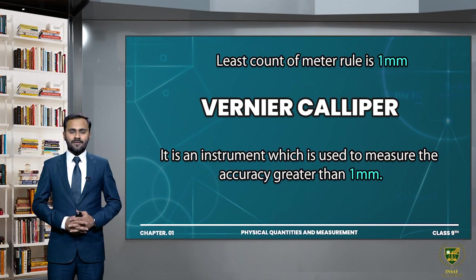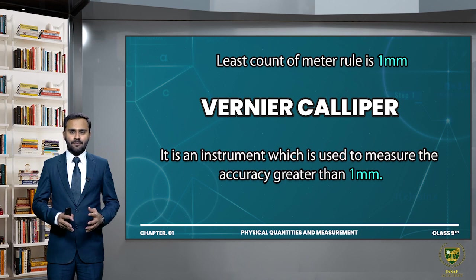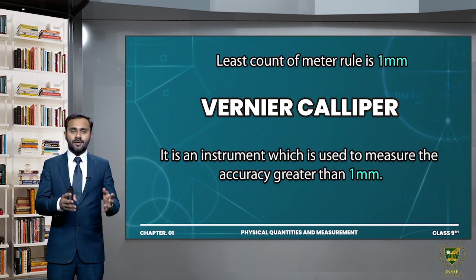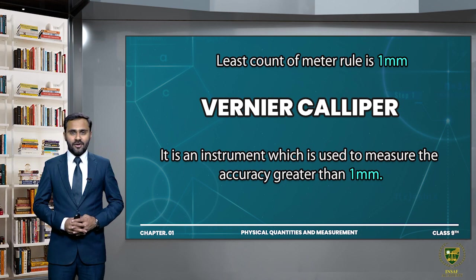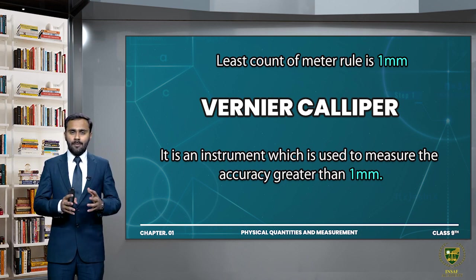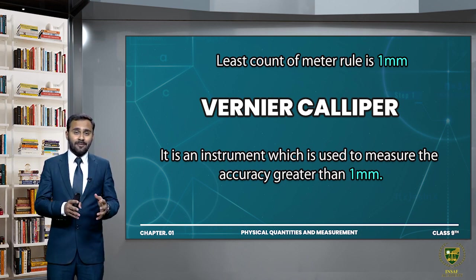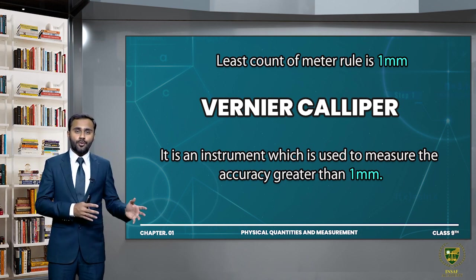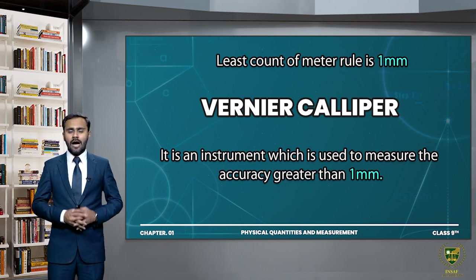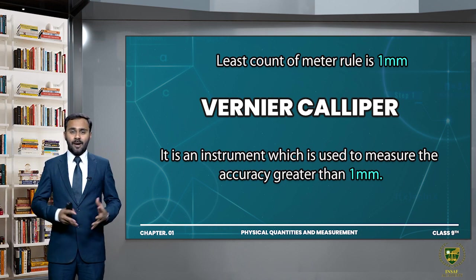As we know that the least count of the meter rule is 1 mm. That means we can measure the length of 1 mm through a meter rule. So, if there is an object whose measurement is smaller than 1 mm, can we not measure it? Of course we can measure it by using Vernier Caliper.